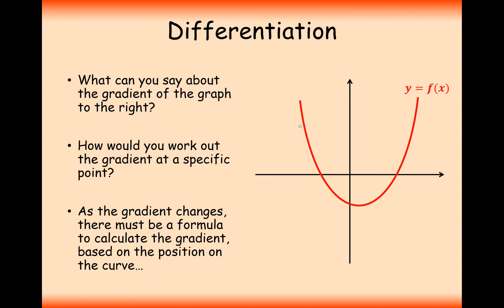So if your x value was up here, your gradient would be very negative. Or if your x value was up here, your gradient would be very positive. Or if your gradient was worked out down here, your gradient would be zero. So the gradient changes for this graph as it goes through its curve.